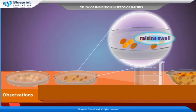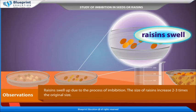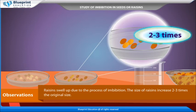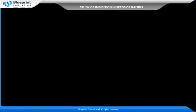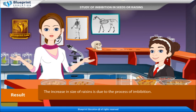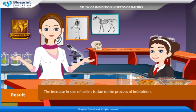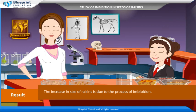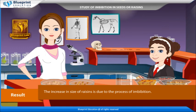Observations: Raisins swell up due to the process of imbibition. The size of raisins increases 2 to 3 times the original size. Result: The increase in size of raisins is due to the process of imbibition.